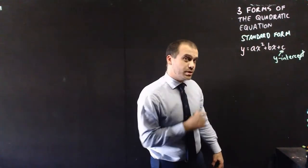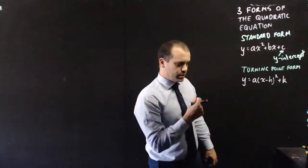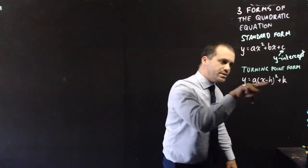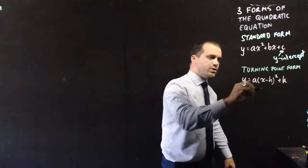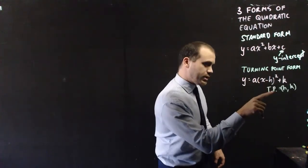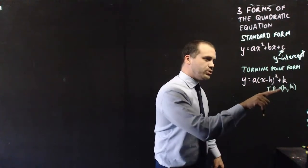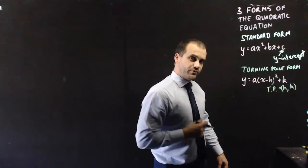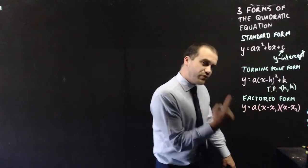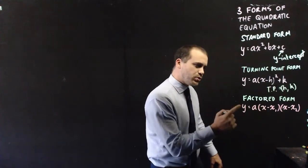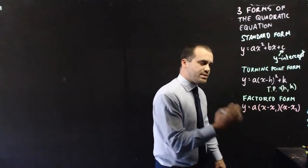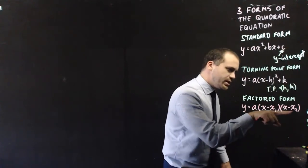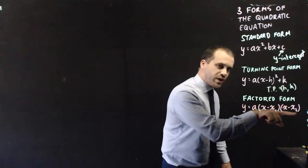Another form we have is turning point form. We love turning point form because we can look at these two values and know straight away that the turning point is equal to h, k. Finally we have factored form, which is awesome because it tells us what the x-intercepts are just by looking at this value here and this value here.